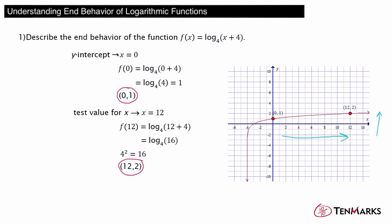Note that the vertical line x equals negative 4 is a vertical asymptote. Therefore, as x approaches negative 4, f of x approaches negative infinity.